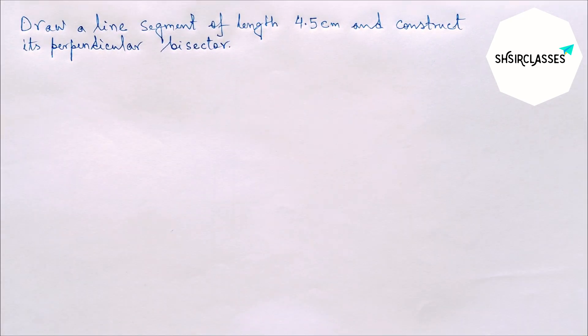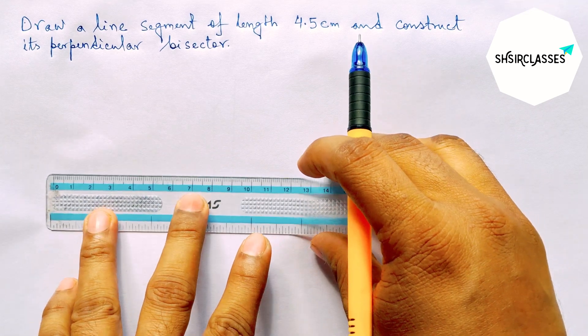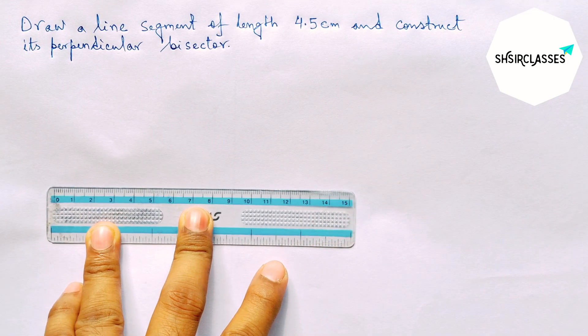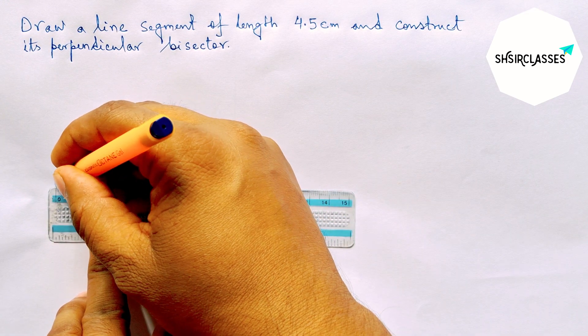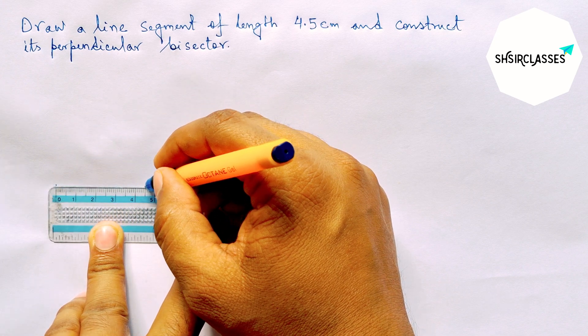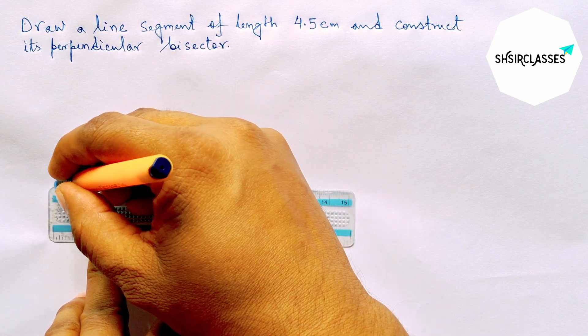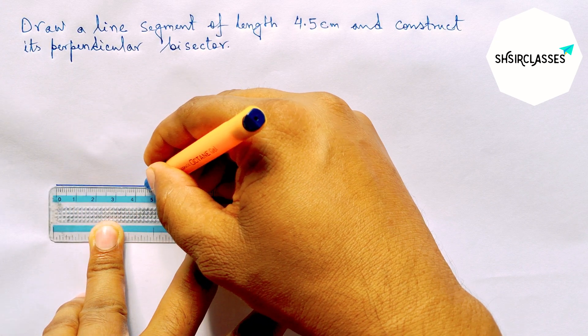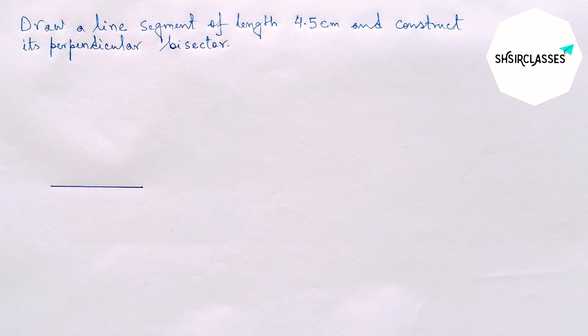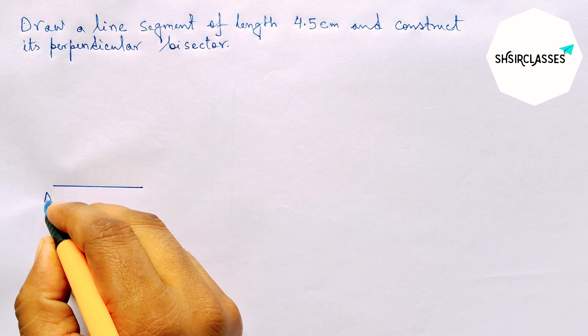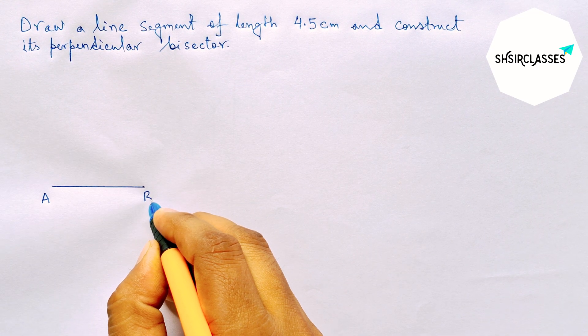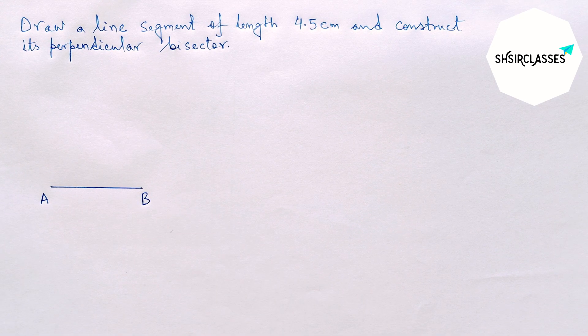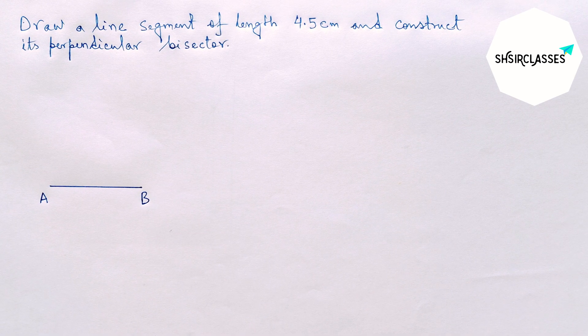So let's start the video. First of all, let us draw here a line segment of length 4.5 centimeter. This is a 4.5 centimeter line segment. Next, labeling here point A and here B.